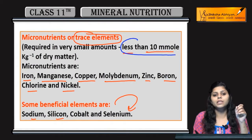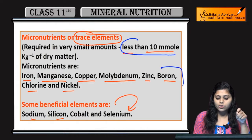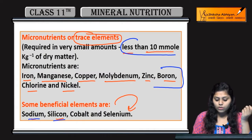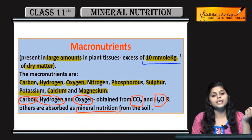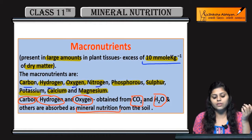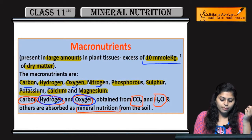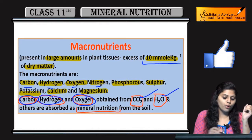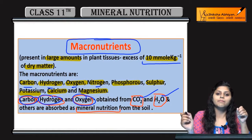To summarize: micronutrients are less than 10 millimole per kg inverse of dry matter — examples include iron, manganese, copper, molybdenum, etc. Beneficial elements include sodium, silicon, cobalt, and selenium. Macronutrients are more than 10 millimole per kg inverse of dry matter — carbon, hydrogen, oxygen, and nitrogen are macronutrients. Out of those, hydrogen, carbon, and oxygen are obtained from carbon dioxide and water. That covers macronutrients and micronutrients.